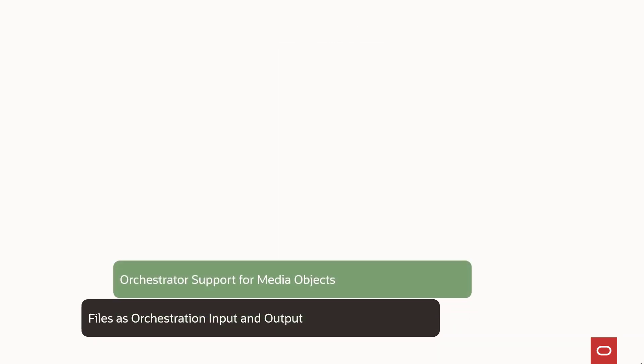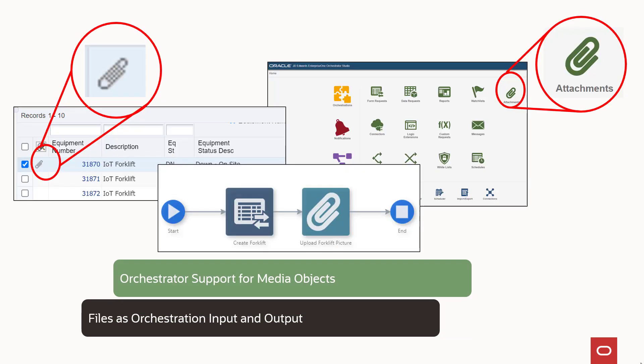The second enhancement simplifies the process of uploading and downloading attachments — sometimes called media objects — to and from JD Edwards. Text, file, and URL attachments are often associated with JD Edwards transactions, and now it's even easier to manage them using a new attachments step in Orchestrator.